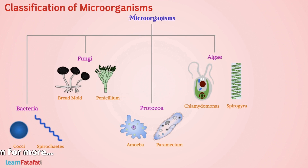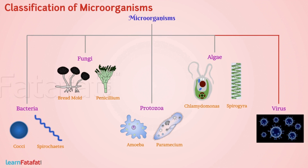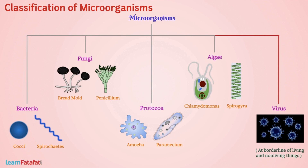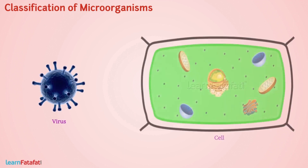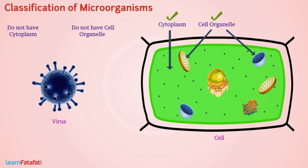Along with these groups, there exists a group of organisms called Viruses, which are considered to be at a borderline of living and non-living things. It is because viruses do not have cellular structures such as cytoplasm or cell organelles, which is the feature of a non-living thing.